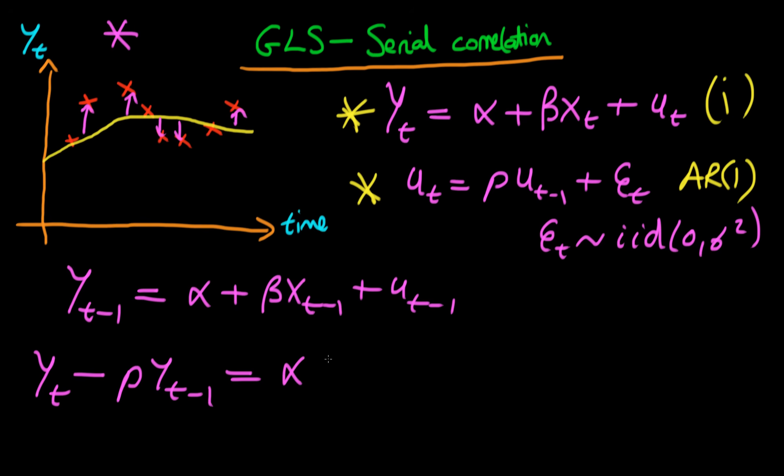If we take off ρ times yt-1, we get α times (1-ρ) plus β times (xt - ρxt-1) plus the last term which we get here is ut minus ρ times ut-1. Well, why have we done that then? If we look at this error term which we have here, this composite error term, then we can recognize it from this AR(1) model which we specified up here.